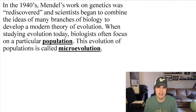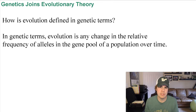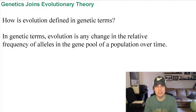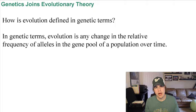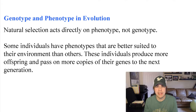When studying evolution today, biologists often focus on a particular population — evolution happens within populations. How is evolution defined in genetic terms? In genetic terms, evolution is any change in the relative frequency or percentages of alleles in a gene pool of a population over time. If allele frequencies are changing in a population according to statistical analysis, evolution is happening.